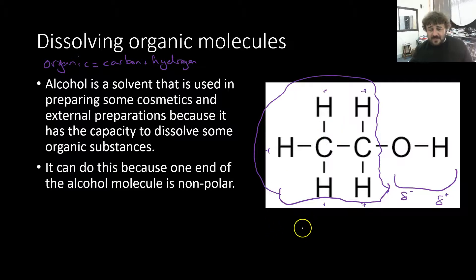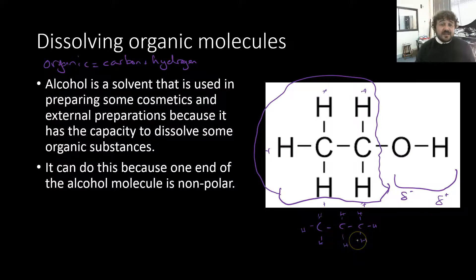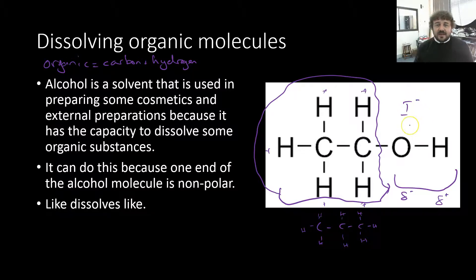A lot of organic chemicals look like this, where each dash represents a hydrogen, and they're uniform all the way around — the same all the way around. So because they're non-polar, you need something like them to dissolve them. That's because like dissolves like: the non-polar end of ethanol comes in and dissolves non-polar substances. But if we've got something like iodine, which is a non-polar molecule, it will dissolve in the non-polar end.